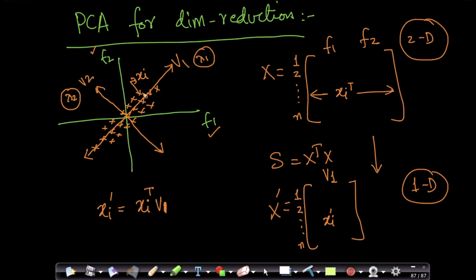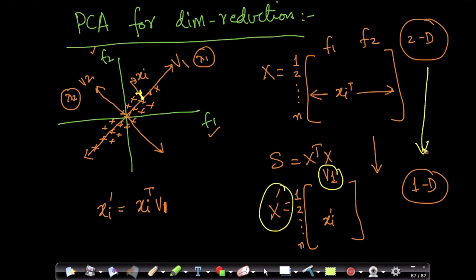Geometrically, I am taking my point xi and projecting it onto v1, which gives the best representation on that axis. My feature has changed from f1 and f2 to v1. Since v1 is the dimension in which variance is maximal, projecting onto v1 is the best way to convert this data from 2D to 1D.